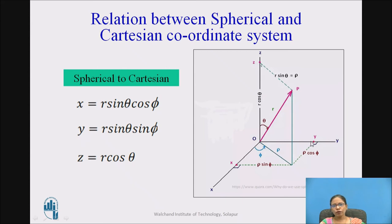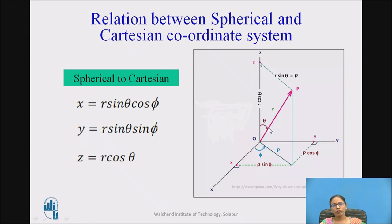To find y: y is the front side for angle phi, so it is rho times sin-phi. Since rho is r-sin-theta, y equals r-sin-theta-sin-phi. To find z: z is the adjacent side for angle theta, and the hypotenuse is r, so z equals r-cos-theta. Therefore, the spherical to cartesian relations are: x equals r-sin-theta-cos-phi, y equals r-sin-theta-sin-phi, and z equals r-cos-theta.